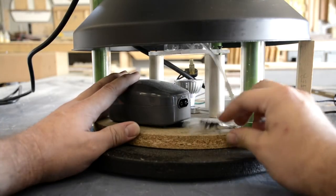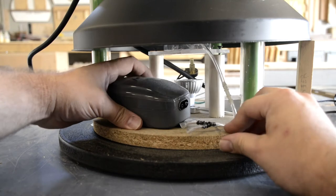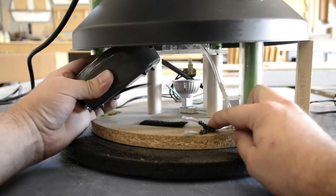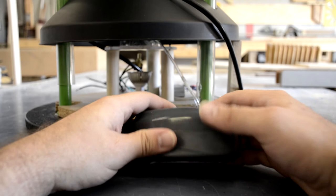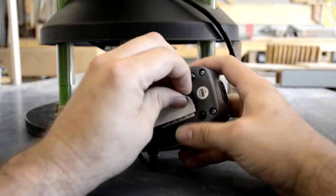Remove the air line from the existing pump and remove the pump from the base of the unit. Swap the old pump with the new pump, securing it with velcro.